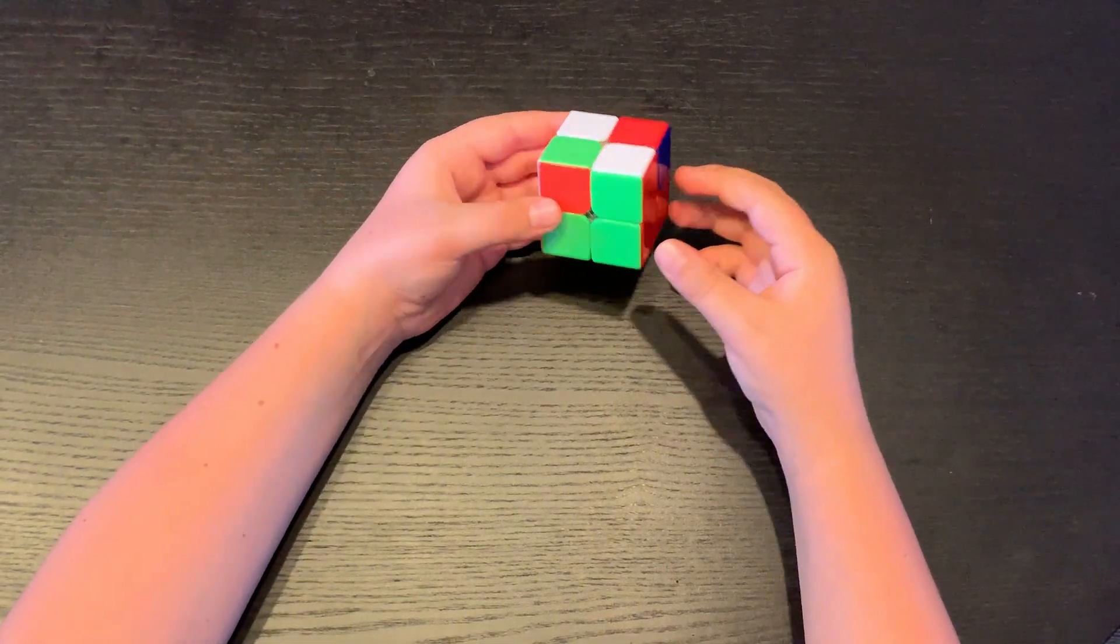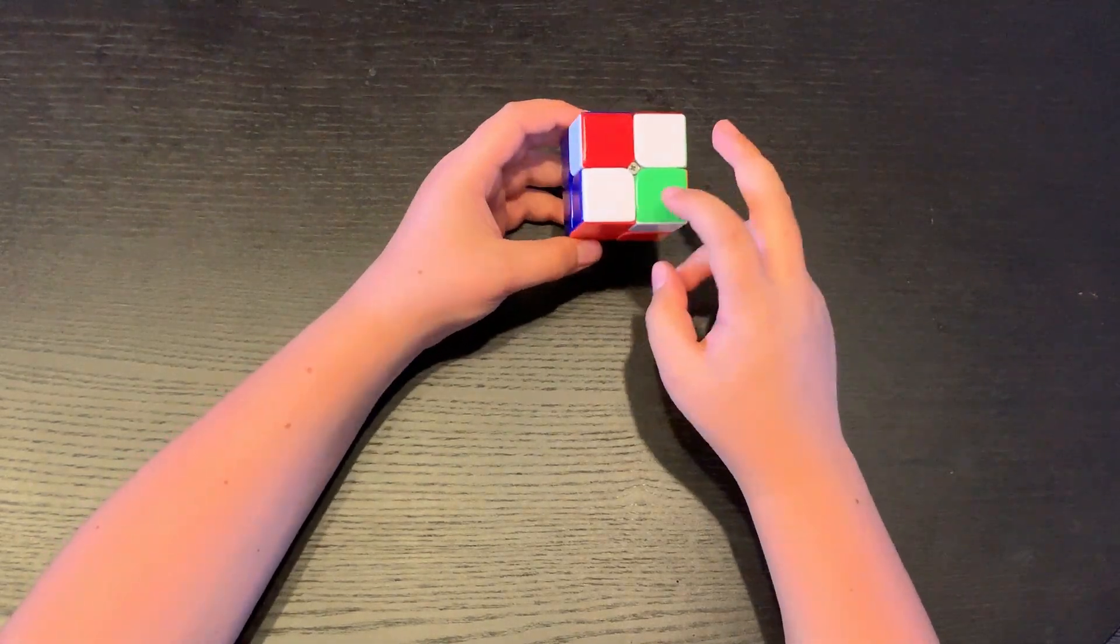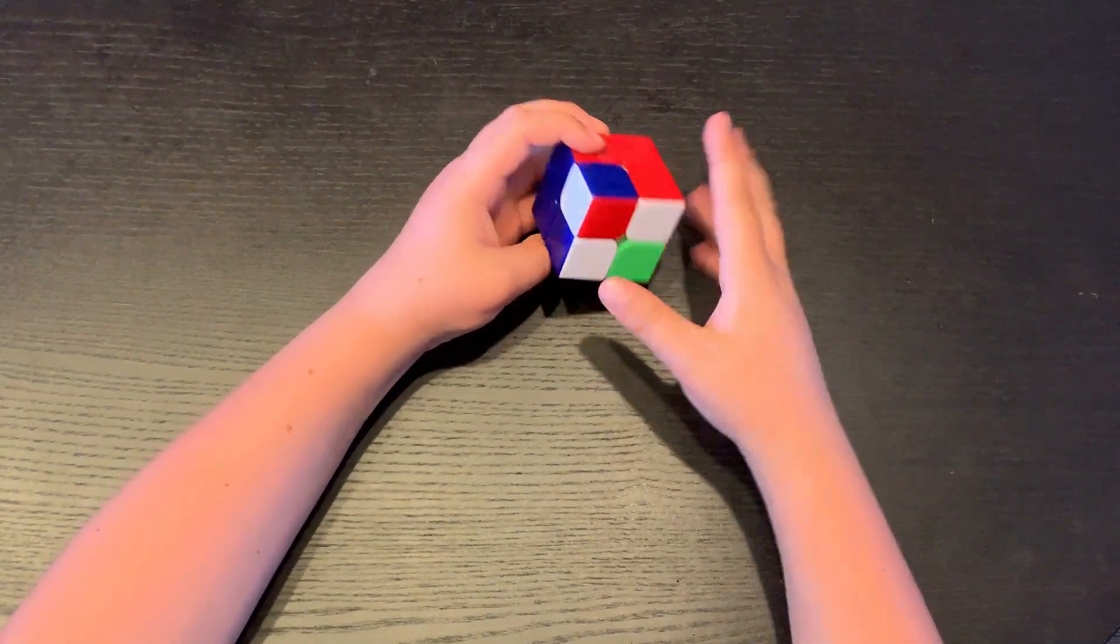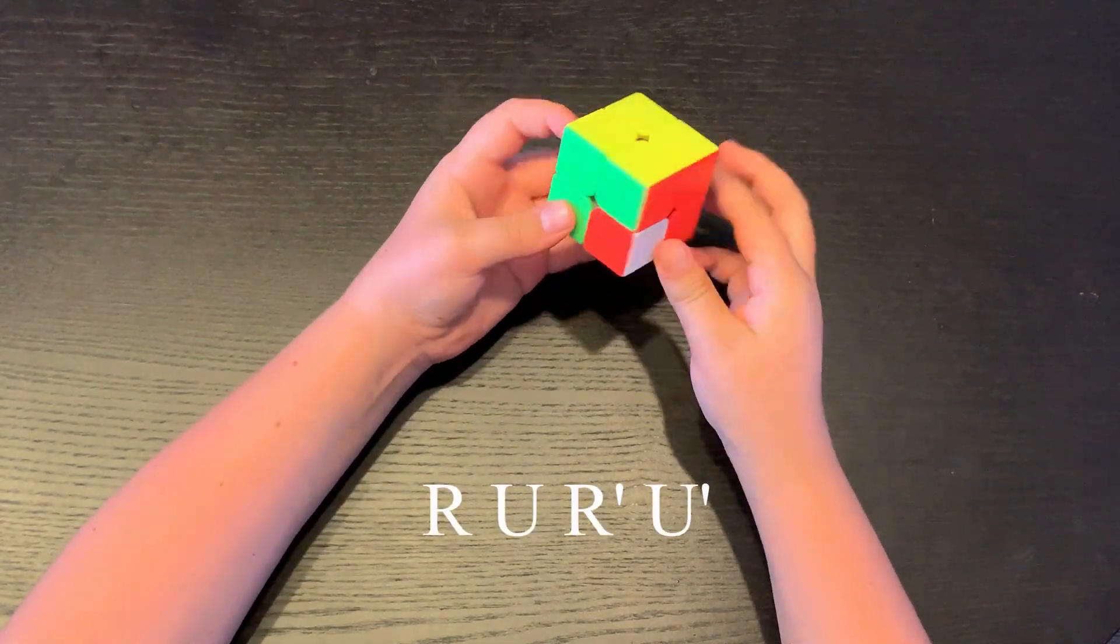So the beginner's method that I learned consisted of making the first layer and then trying to match up two corners and then flipping the last two.